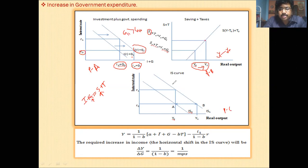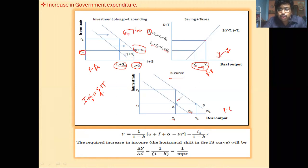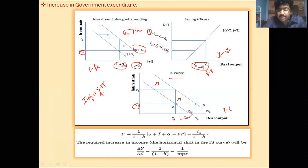Look at panel C figure — this represents the IS curve. As a result of the increase in government spending, the IS curve will shift up. The rate of interest is the same, but income has increased from Y0 to Y1 because of the shifting of IS0 to IS1, as there is an increase in government expenditure.